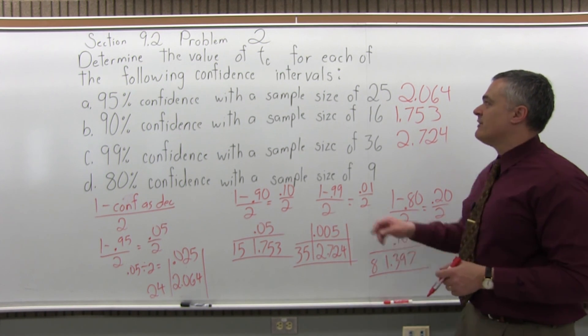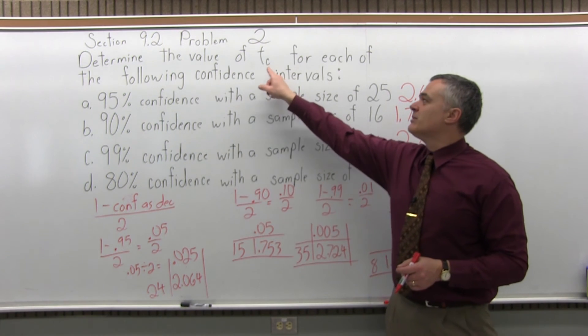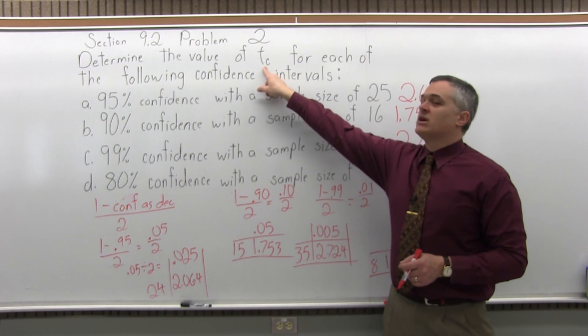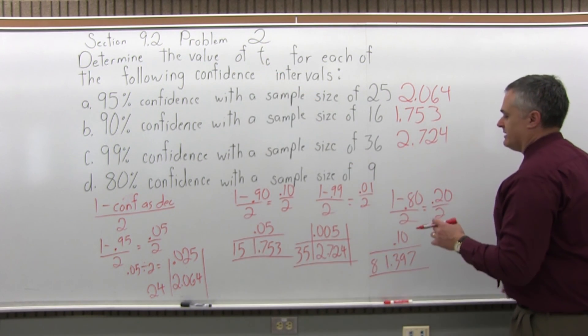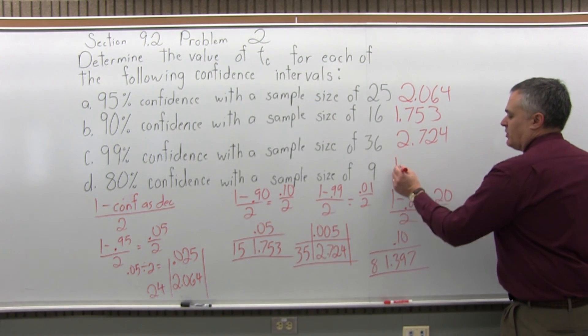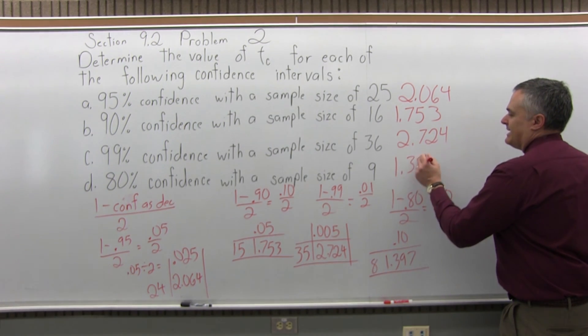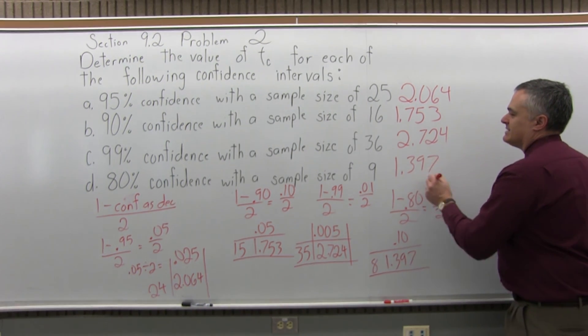As you fill in the confidence interval formula, the value for T sub C for part D would be 1.397.